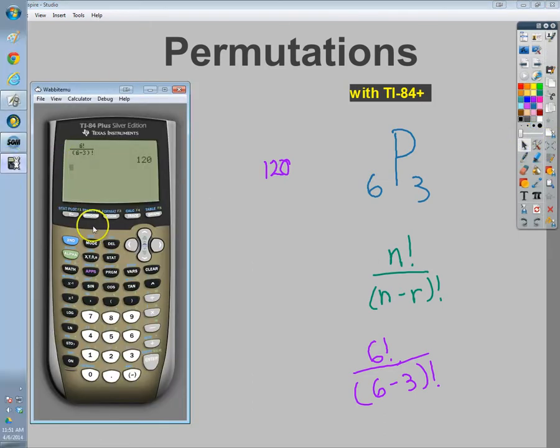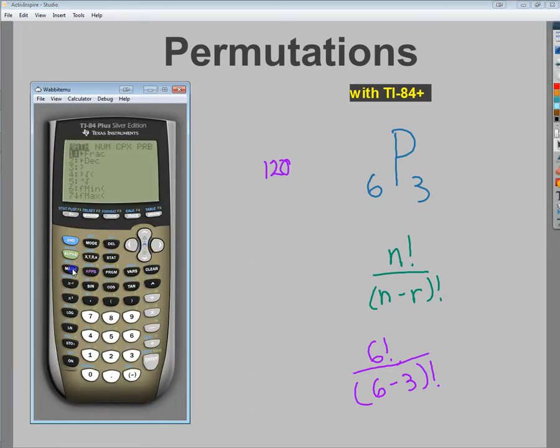Now, as you probably saw using the math menu before, you could just type it in directly as a permutation. So the first thing you need to do is put your total number there, so your n value goes here. And then go to the math menu, click over to the PRB menu, which is probability.